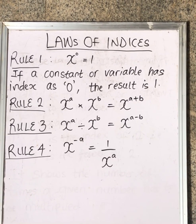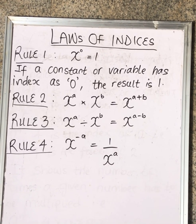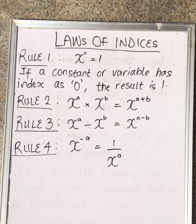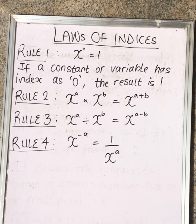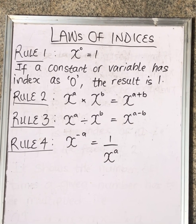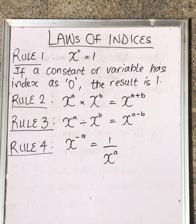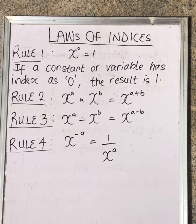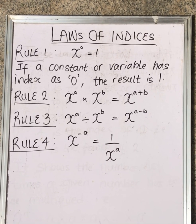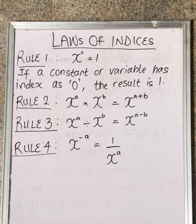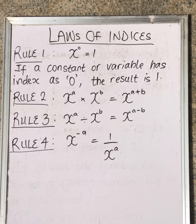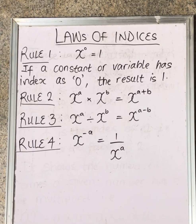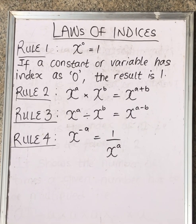Moving on to rule number four: X raised to the power of negative A will give you one over X raised to the power of A. Anything raised to the power of a negative number will always give you its reciprocal. Reciprocal means one over that same thing, but this time without the negative — the negative changes to one divided by, canceling the negativity.